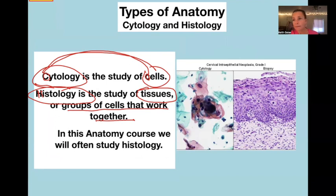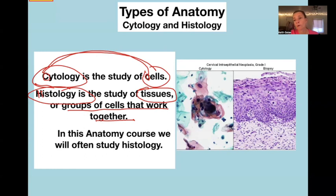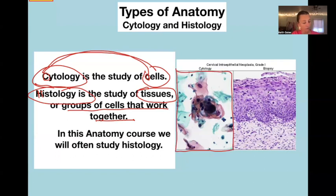In the anatomy course we'll generally study histology — the study of tissues — more than the study of cells. As an example of how cytology is used in a medical setting: when taking a pap smear from a woman, you brush some cells off the surface of her cervix and look at them under a microscope. That gives you a picture of loose cells that have been brushed off the surface of the cervix.